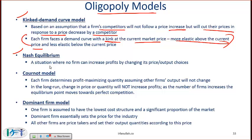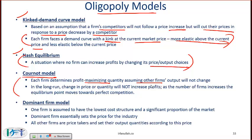Nash equilibrium is a situation where no firm can increase profits by changing its price or output choices. The Cournot model is fairly complicated, but remember at least these key points: each firm determines its profit-maximizing quantity assuming the other firms' output will not change, and in the long run a change in price or quantity will not increase profits.